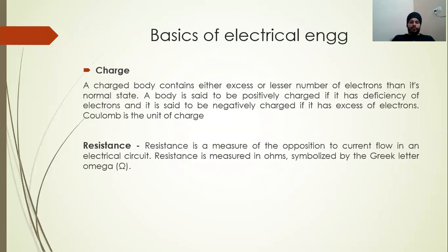Next is resistance. What is resistance? If electricity is passed through any conductor like copper or aluminium, it will oppose the flow of electrons. Resistance is a measure of the opposition to current flow in an electric circuit. The opposing force is called resistance, and its symbol is omega (Ω).